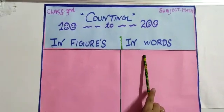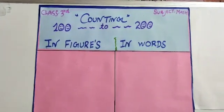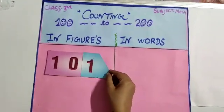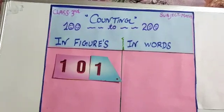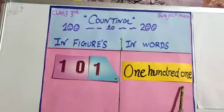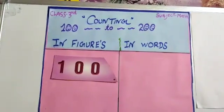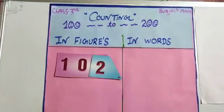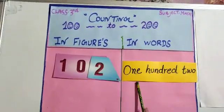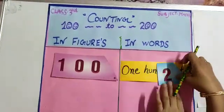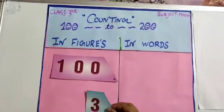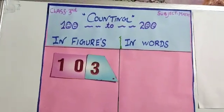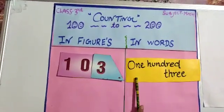So first we have 100, and the first number is 101. 101 in words: one hundred and one. Next number is 102. 102 in words: one hundred and two. Next number is 103. 103 in words: one hundred and three.